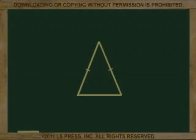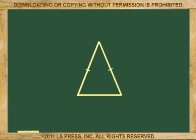In the isosceles triangle, the perpendicular bisector only happens once, from the unequal angle to its opposite side.